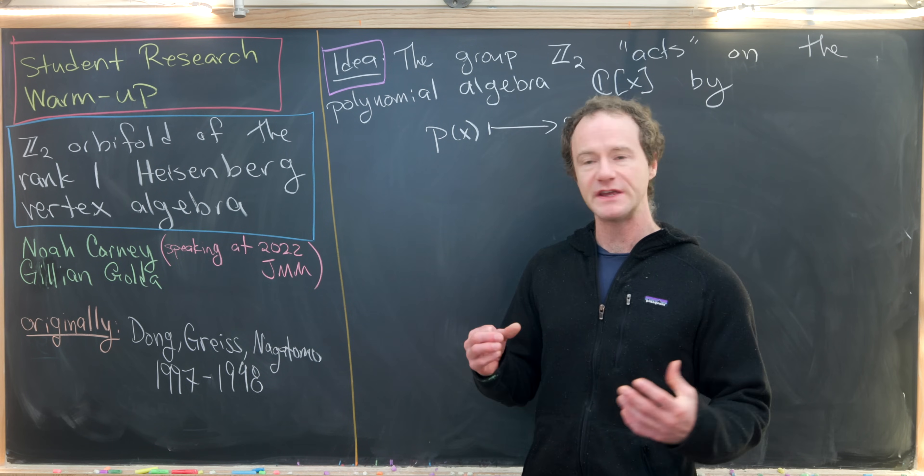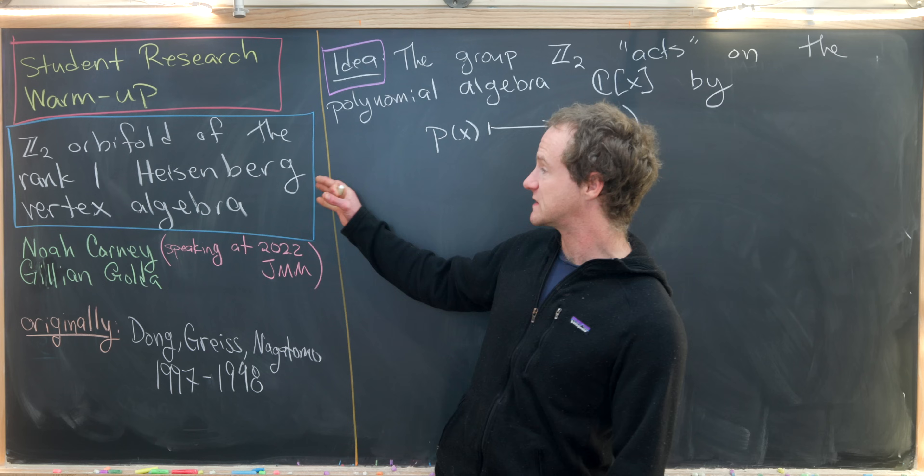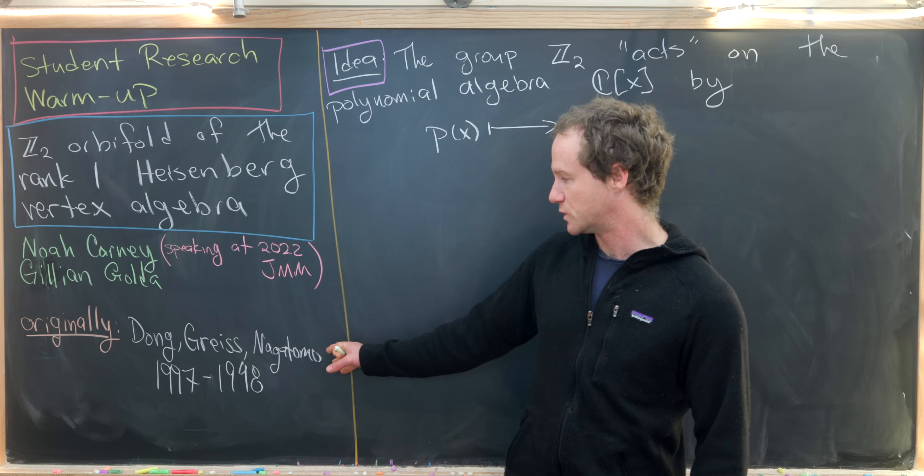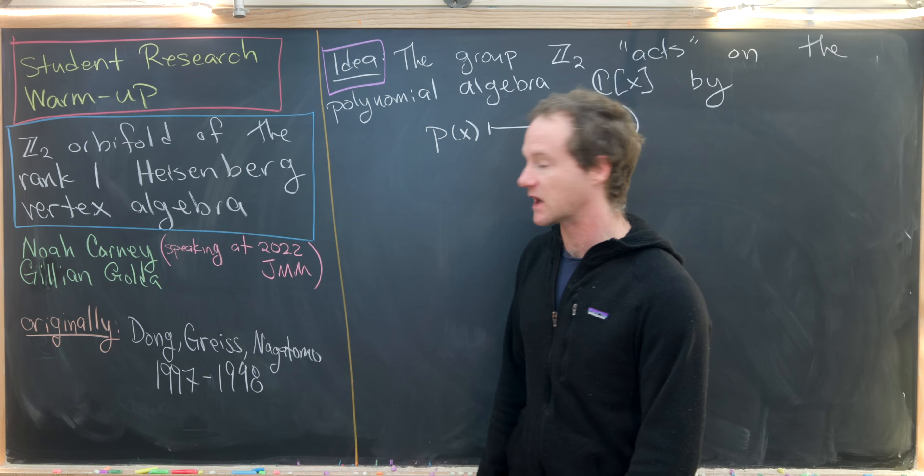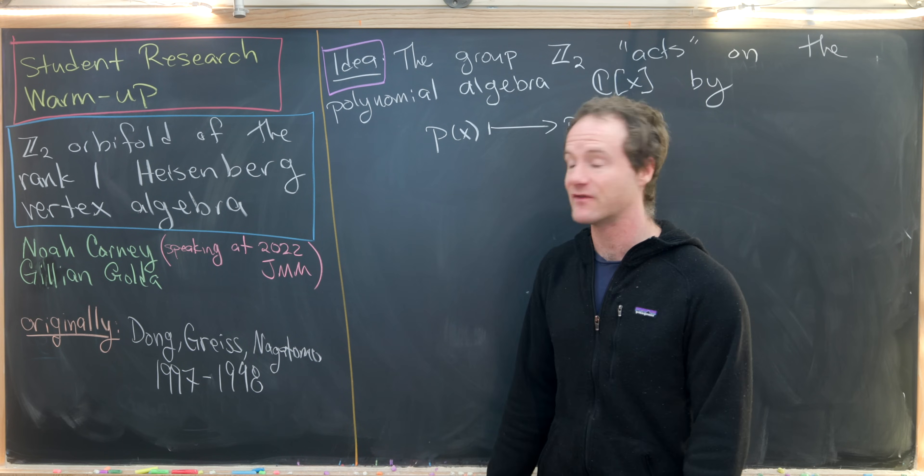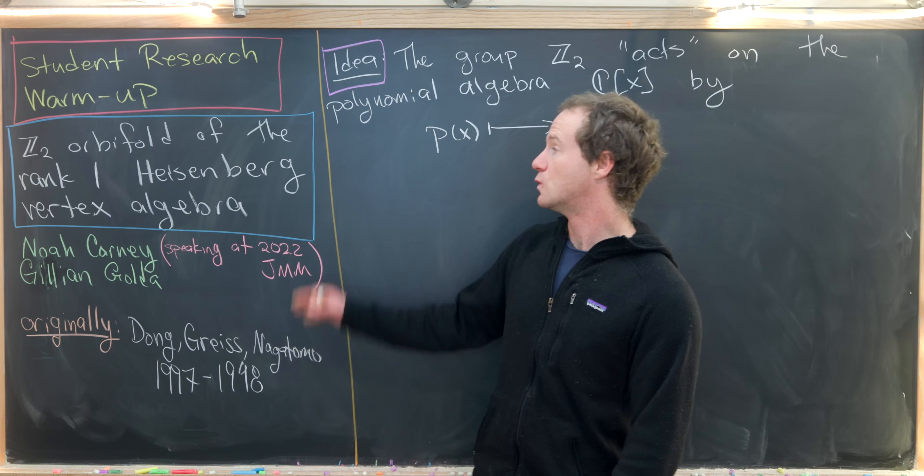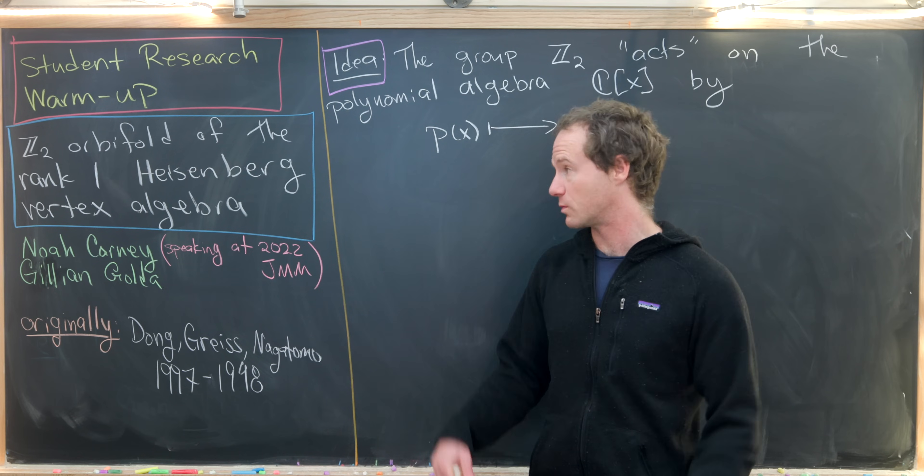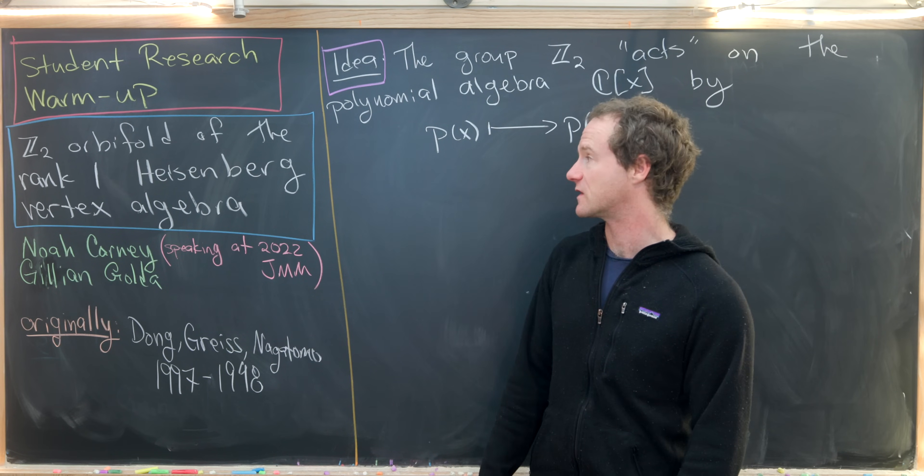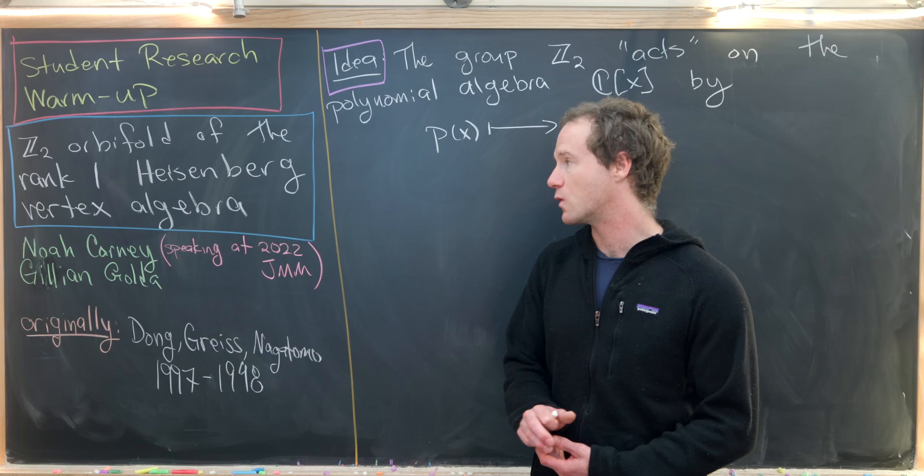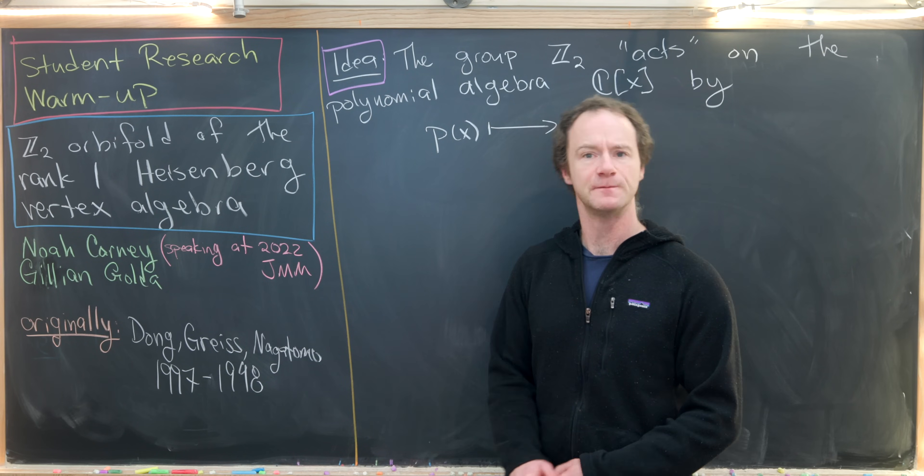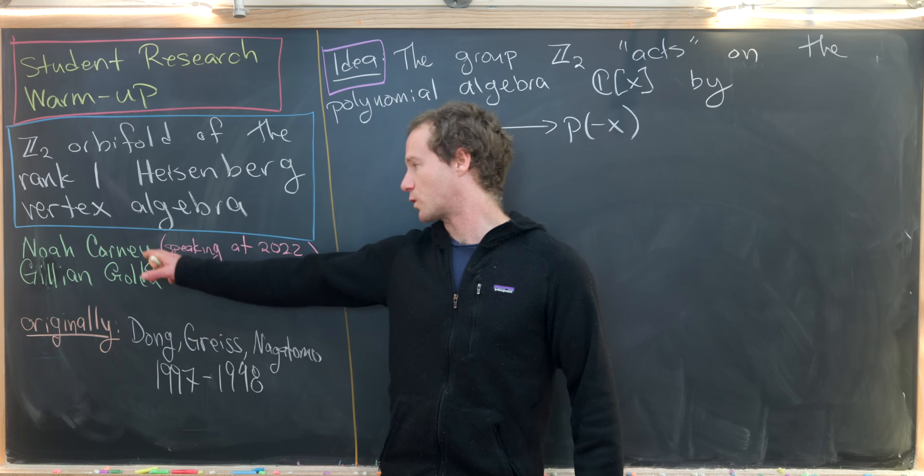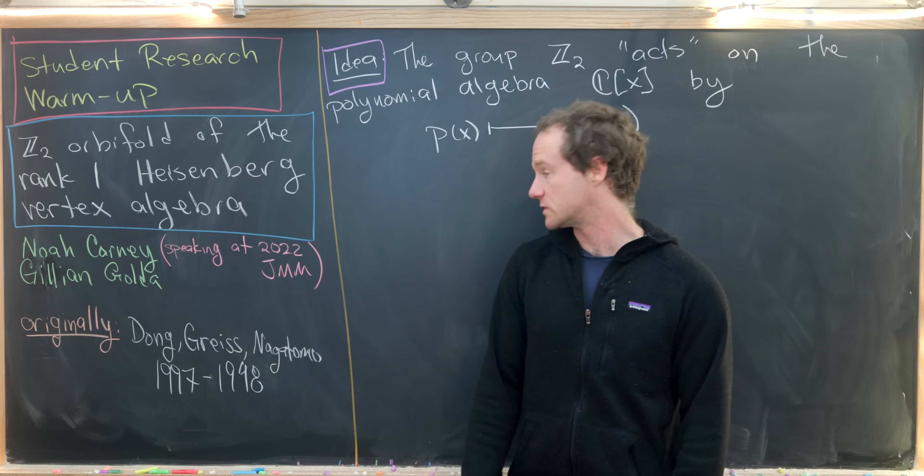In that summer, we studied orbifolds or invariant subspaces of Heisenberg vertex algebras. But before we could do anything new, we looked at an old problem solved by Don Grice and Nagatomo via a series of papers in 1997 and 1998. The two students involved were Noah Carney and Jillian Golda.